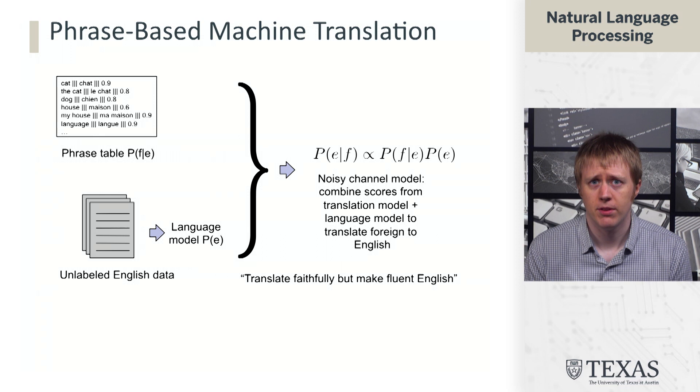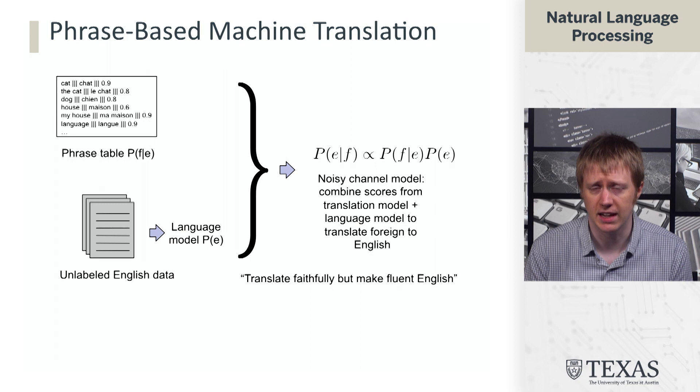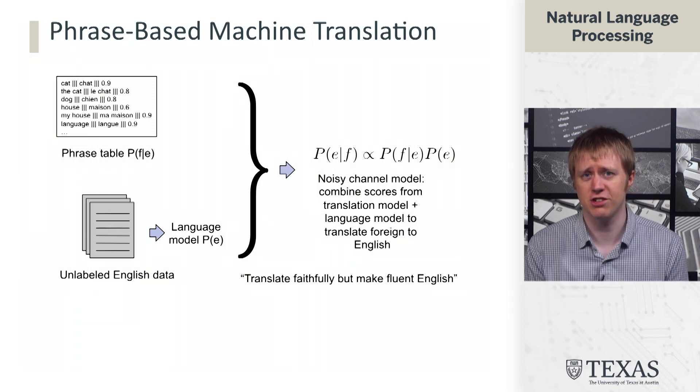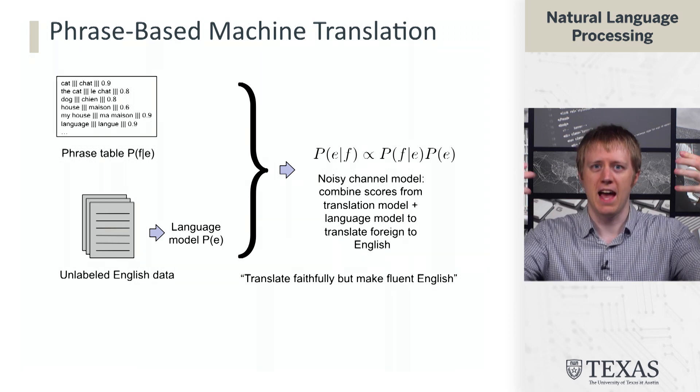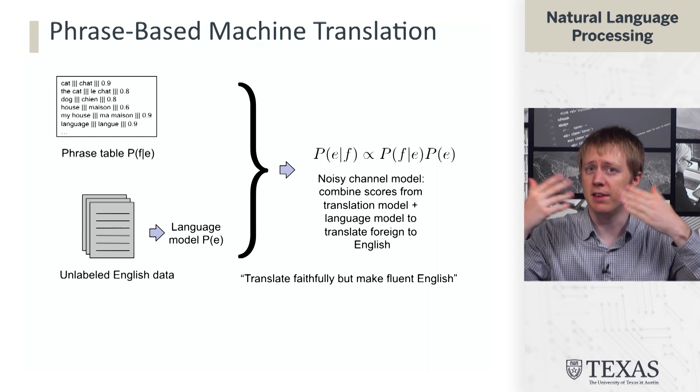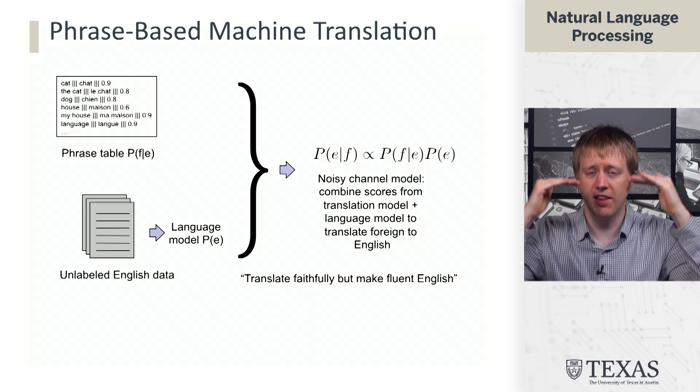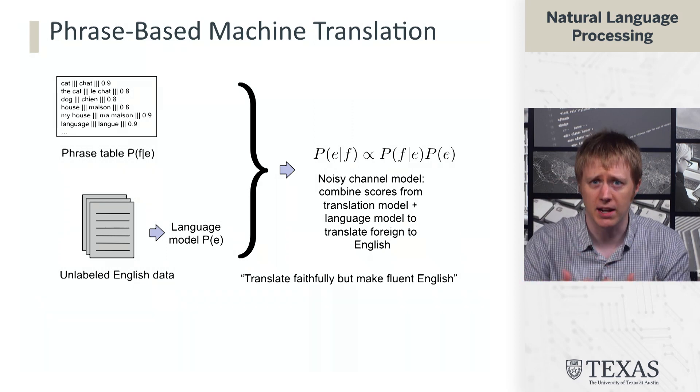And given these two pieces, we are going to exploit an idea called the noisy channel, which is that the probability of an English sentence conditioned on a French sentence, assuming we're translating into English from French, is proportional to the probability of that English sentence times the probability of the French sentence conditioned on the English sentence. So basically, it's like generate the English sentence and then translate into French as a way of sort of inverting the process. This is similar to HMMs for part of speech tagging. It's the same kind of idea here.